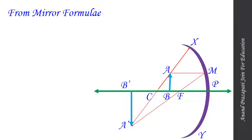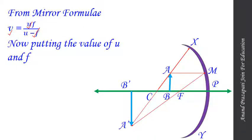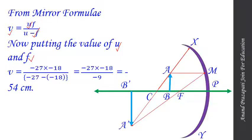From the mirror formula, we know that V equals UF divided by U minus F. Putting the values of U and F, we get V equal to minus 27 multiplied by minus 18, divided by minus 27 minus minus 18, which simplifies to minus 27 plus 18, equal to minus 9 in the denominator.